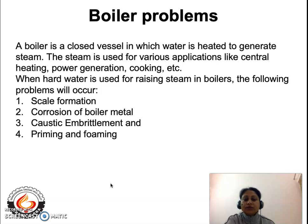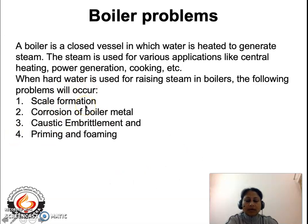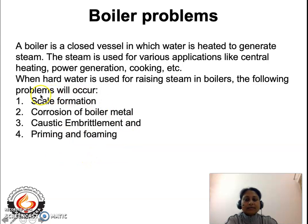When hard water is used for raising steam inside a boiler, several problems are encountered. The first is scale and sludge formation. The second is corrosion of the boiler metal. The third is caustic embrittlement, and the fourth is priming and foaming. We will now discuss each of these individually.